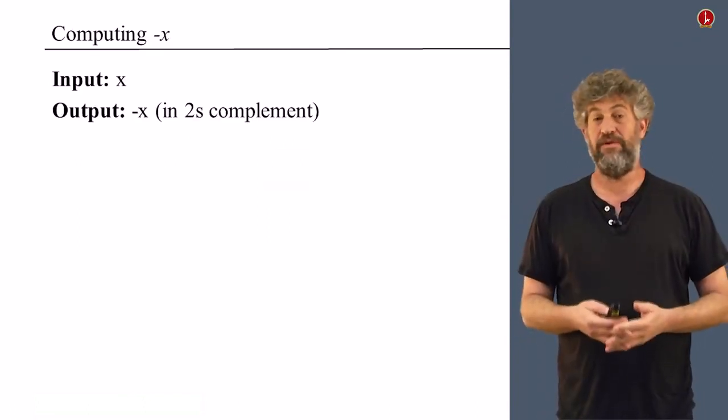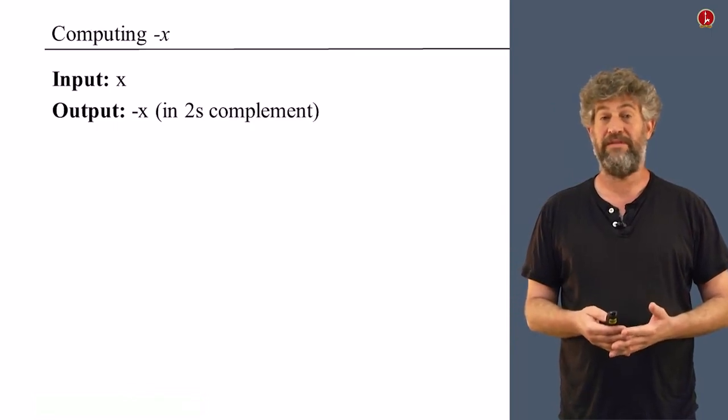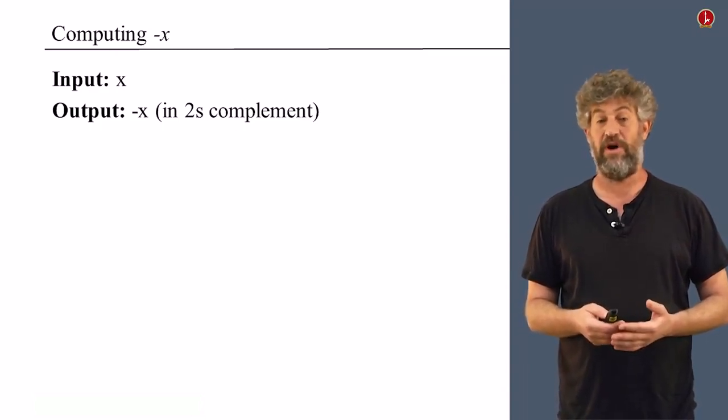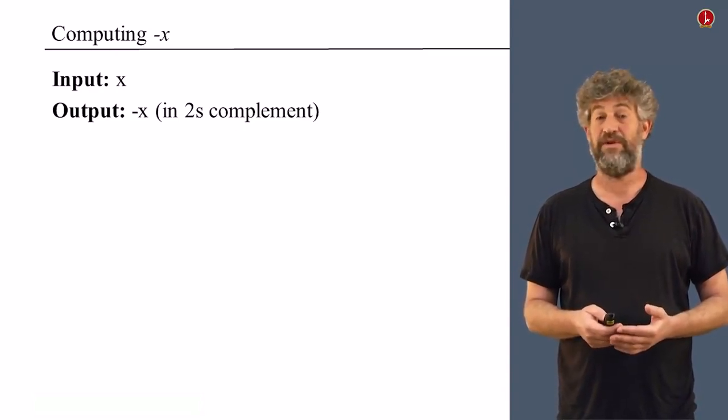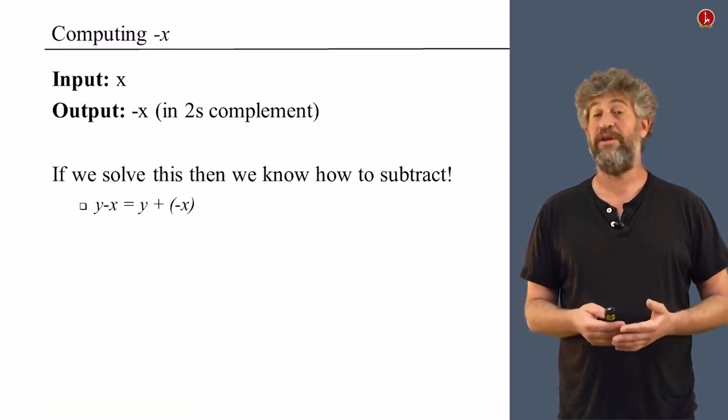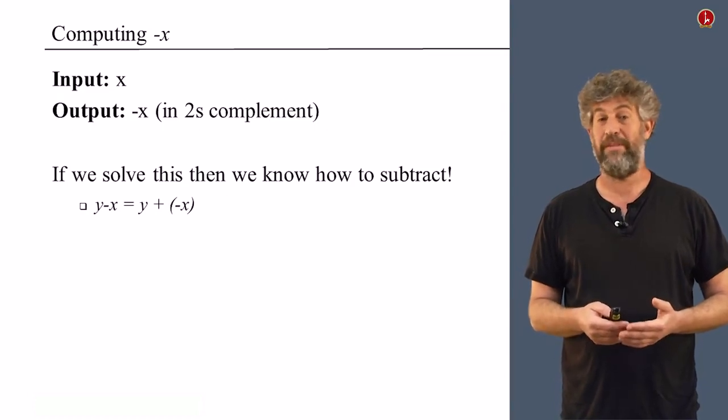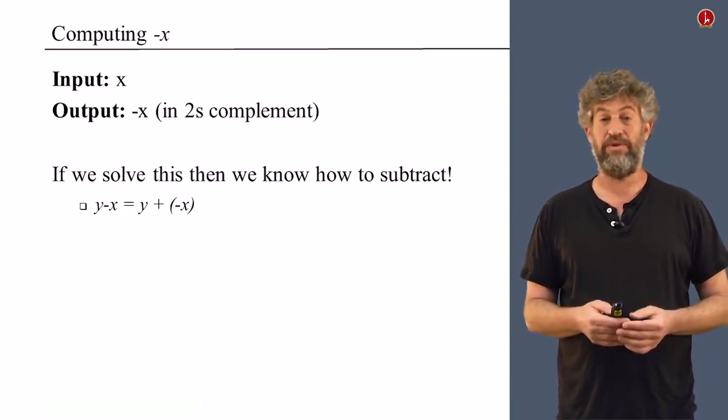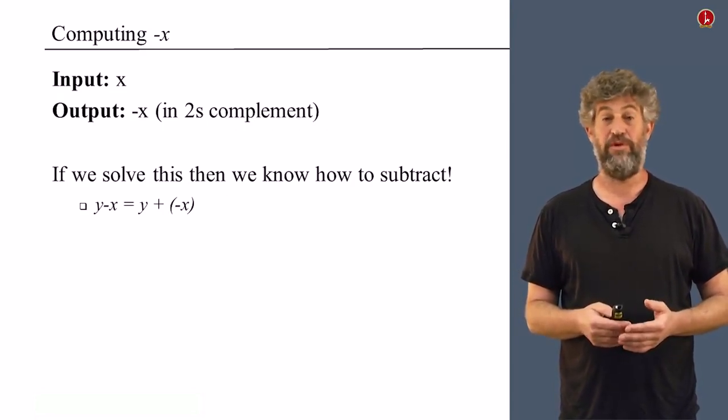One thing we may still need to do is given a number, get its negation. So given as input x and a binary number, output its negative, the number negative x, again, in two's complement. Why would we want to do that? Well, for one thing, remember that we still didn't see any circuit that does subtraction. But once we can solve this problem, then definitely we have already solved the subtraction problem. Because if you want to do y minus x, you just need to add negative x to y. And addition, we already know how to do. So once we can compute negative x from an input x, we've already solved the subtraction problem.